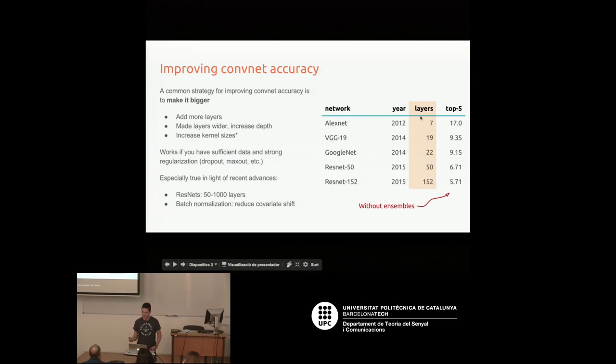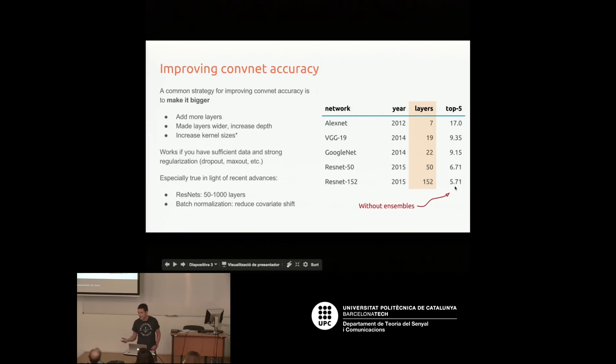Since 2012, the number of layers used in networks has increased a lot — from around seven layers, then 19, then 22 with Google's network. With residual networks, these things now have hundreds of layers, and the top-five error rate has been going down. But when building these massive networks, indiscriminately making things larger is a bad idea because you'll quickly run out of memory.